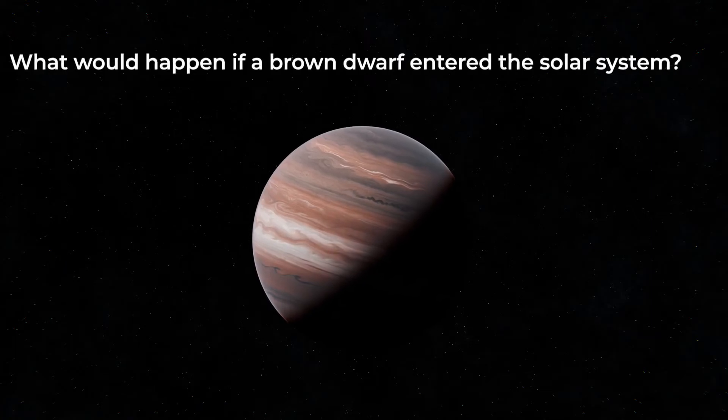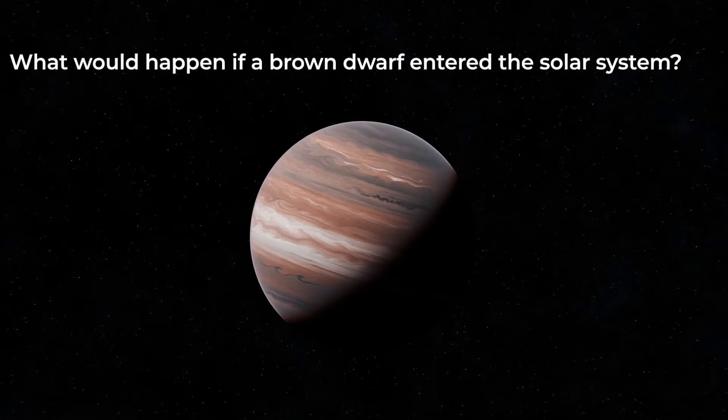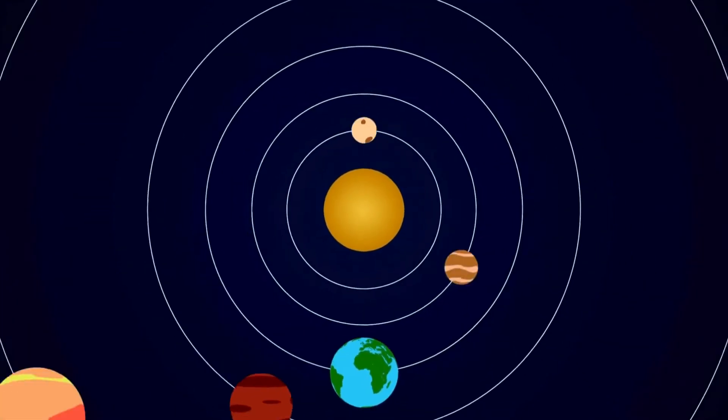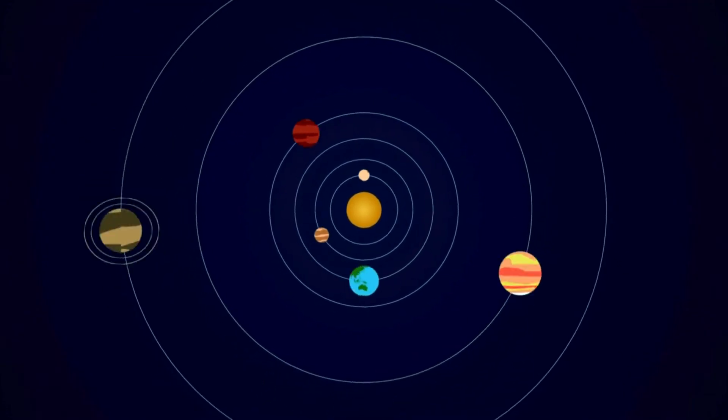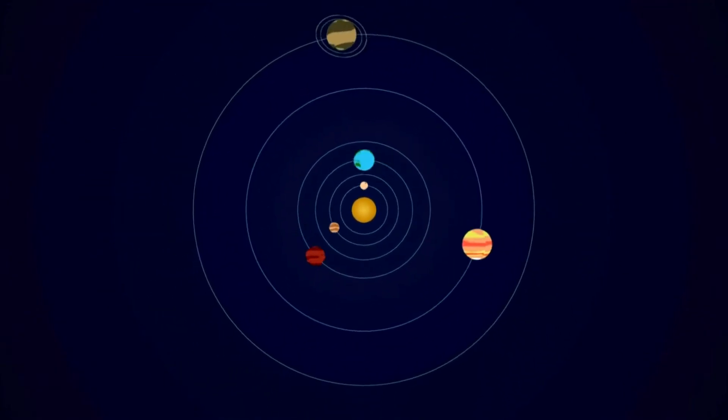What would happen if a brown dwarf entered the solar system? Each planet in the solar system has a unique orbit. No planet shares its orbit with another, and thanks to this they never collide.